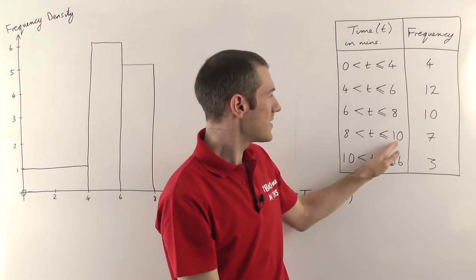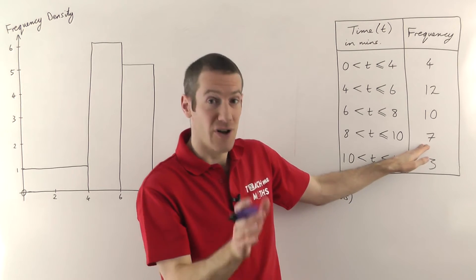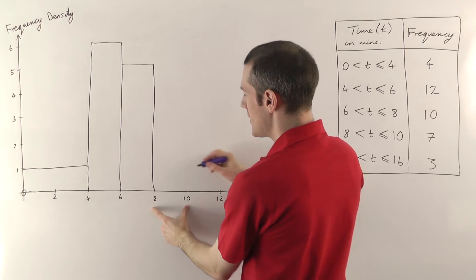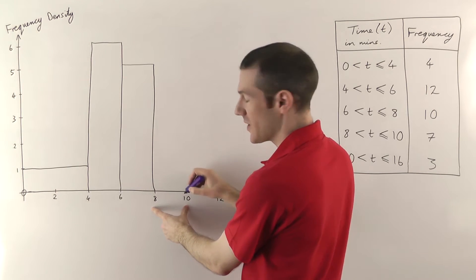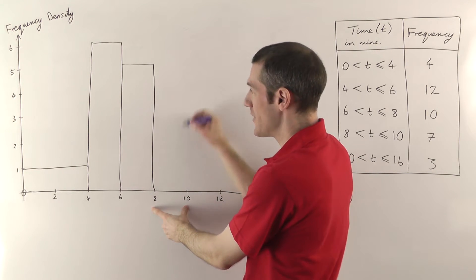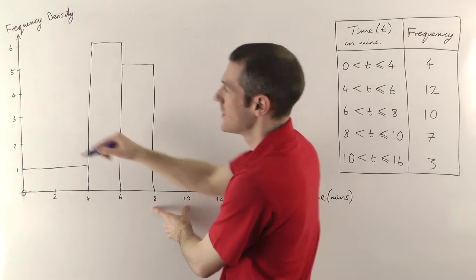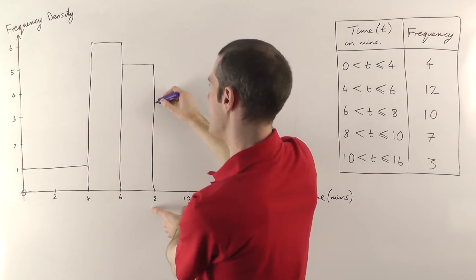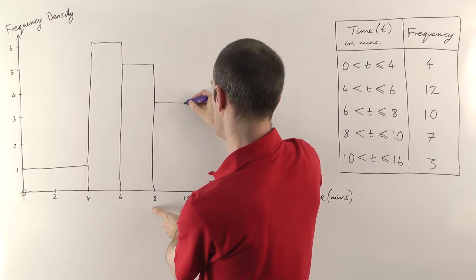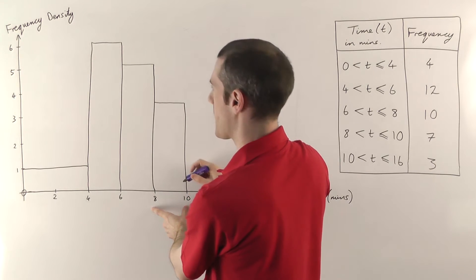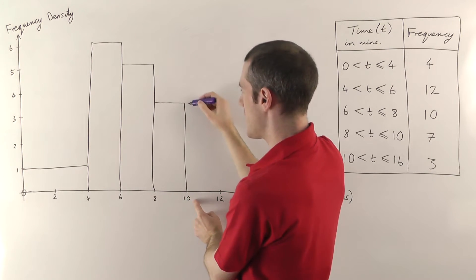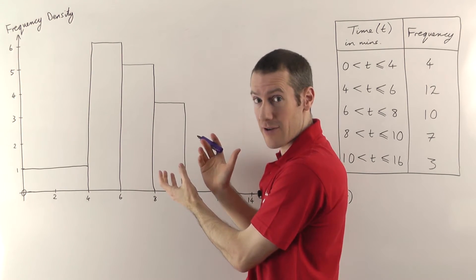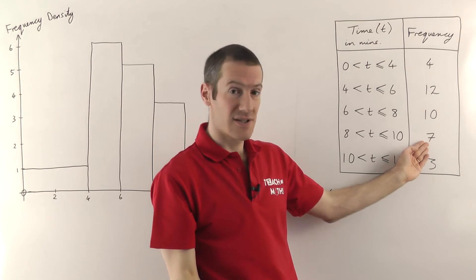The next one, the 6 to 8 bar, has a frequency of 10. From 6 to 8 is a width of 2, so if the area is going to be 10 and the width is 2, the height needs to be 5. I carry on across from there and then straight down so that the bars touch exactly — no gaps between the bars. The next one, 8 to 10, has a frequency of 7. From 8 to 10 is a width of 2, so if the area is 7 and the width is 2, I want the height to be half of 7, which is 3.5. So at 3.5 I go across and then down — 3.5 times 2 gives an area of 7, corresponding to a frequency of 7.